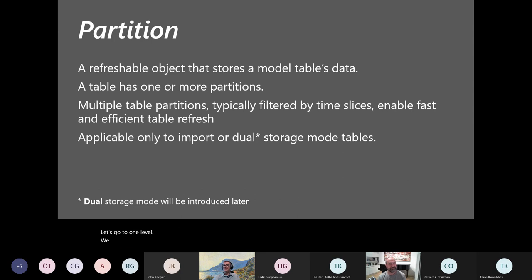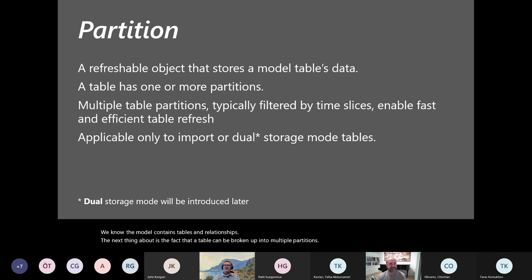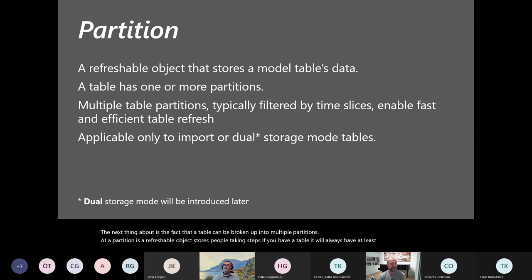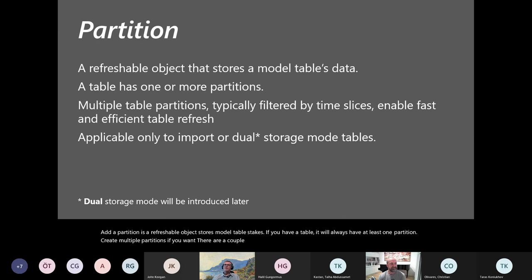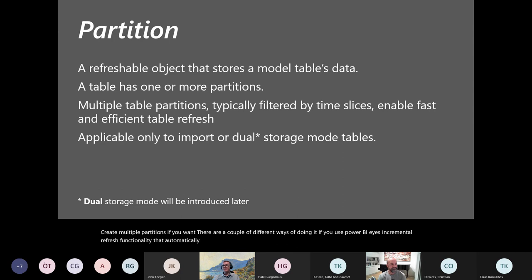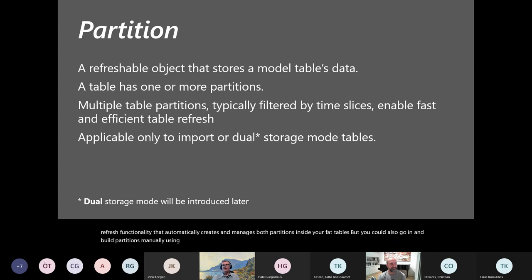Let's go one level deeper. We know that a tabular model contains tables and relationships. A table can be broken up into multiple partitions. A partition is a refreshable object that stores a model table's data. If you have a table, it will always have at least one partition, but you can create multiple partitions. Power BI's incremental refresh functionality automatically creates and manages multiple partitions inside your fact tables. You can also build partitions manually using tools like Tabular Editor.